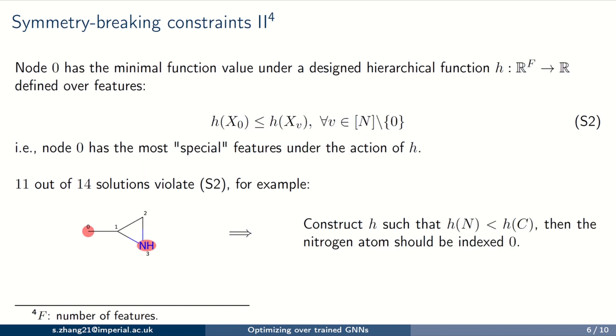Constraints S2 work on the feature level. They are used to make sure node 0 has the most special features in the action of H. One can design the function H based on specific applications so that there are not too many nodes could be chosen as node 0. For example, in the molecular design problem, if a nitrogen atom has a smaller function value comparing to a carbon atom, it will be chosen as the first node. Then 11 solutions will be removed.